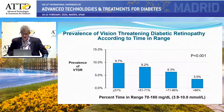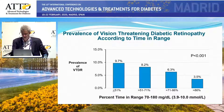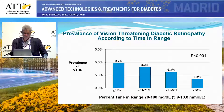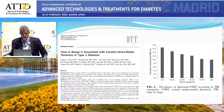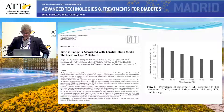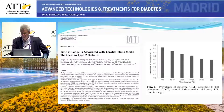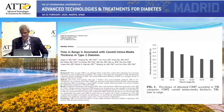Looking at it the other way, dividing groups into time in range quartiles, we can see that the prevalence of vision-threatening diabetic retinopathy was greater with lower time in range, and above 86% time in range it was quite low. Another study by that same group measured carotid intima-media thickness in over 2,000 patients with type 2 diabetes, and found that greater time in range was associated with lower prevalence of abnormal carotid intima-media thickening — a marker of macrovascular disease.